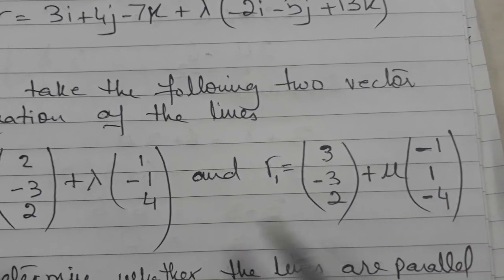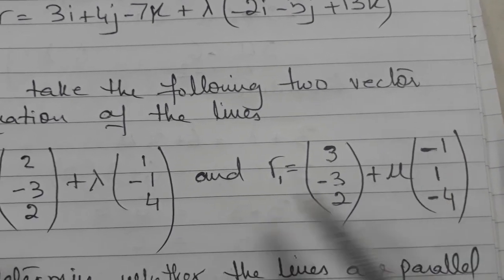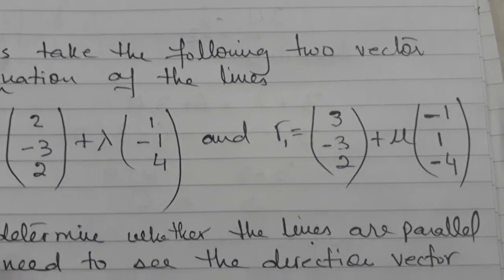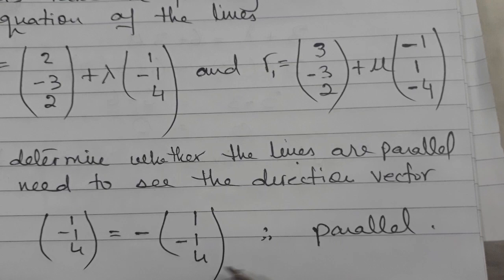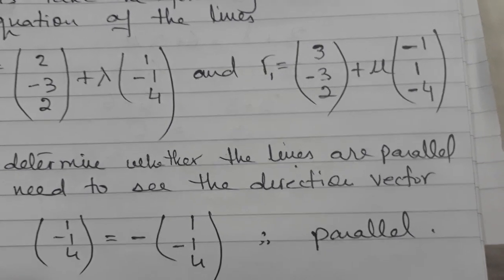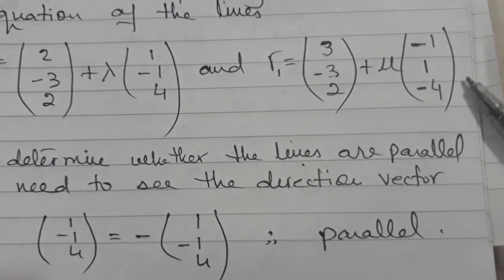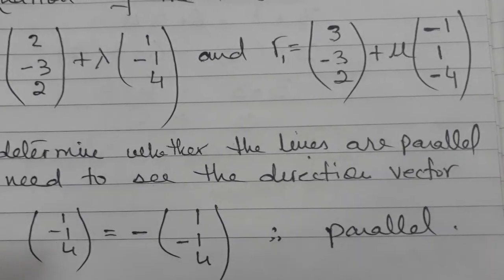So if you look at these two, what do you see? If you notice here, one is just a minus one multiple of the other. So now whenever two directions are multiple of each other, it means they are parallel.